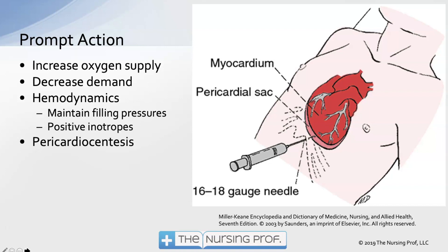This is something the physician will do, but we may need to assist. We expect to see blood as we hit the ventricle. The fluid from the pericardial sac may be a darker color of blood, serous fluid, or pus-like fluid — a little different from the nice arterial-looking blood we see in the ventricle.